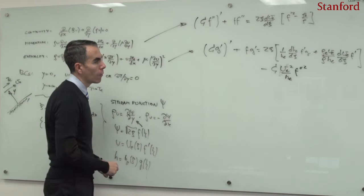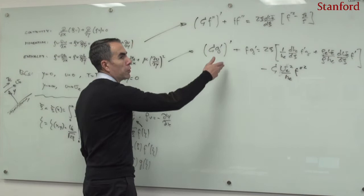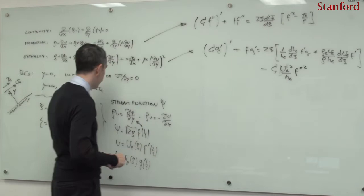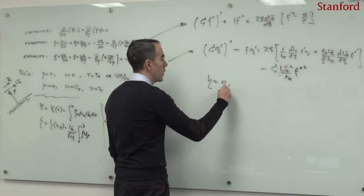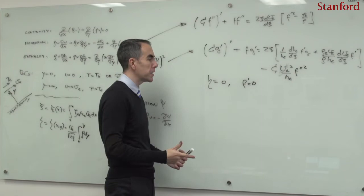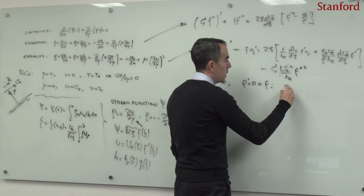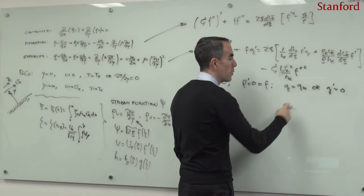These are the two conservation equations for momentum and enthalpy. They must be integrated subject to boundary conditions. At eta = 0 (the no-slip condition), f' = 0 and f = 0. The enthalpy g must equal g_w, or the derivative g' must equal zero, depending on whether the wall is isothermal or adiabatic.